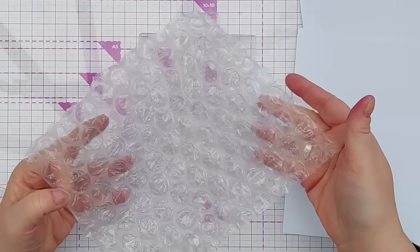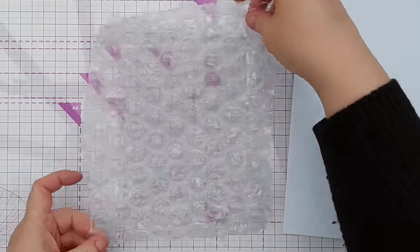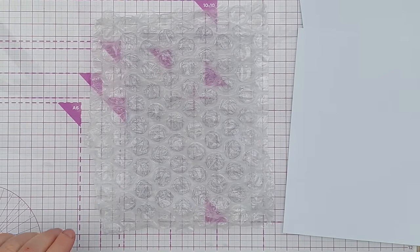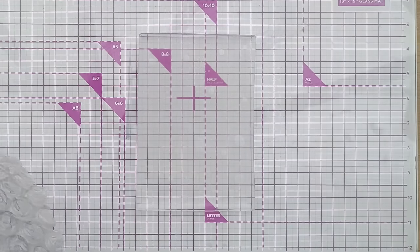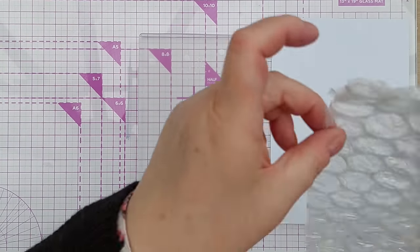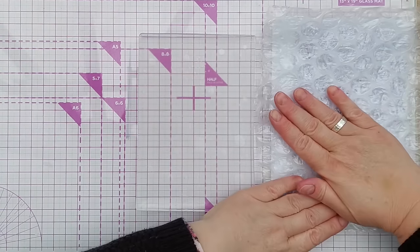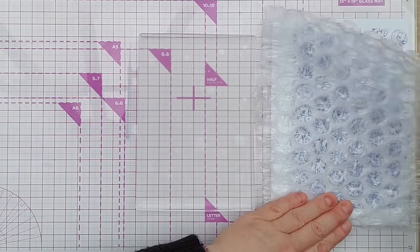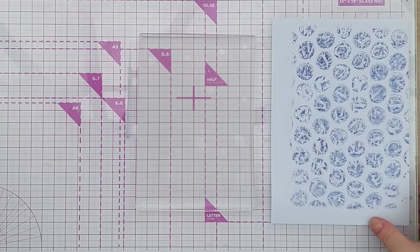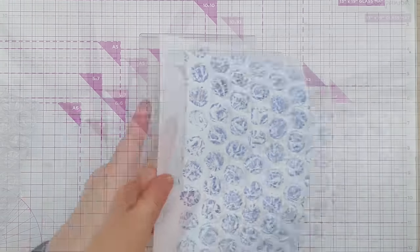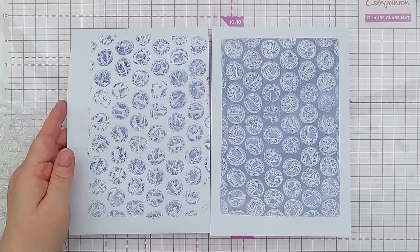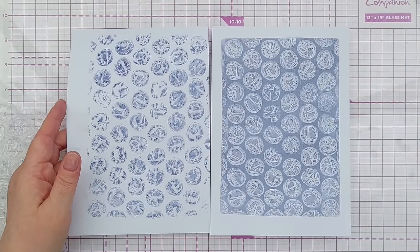Now we should have some ink left on here and I think what I'm going to do is spritz it with a bit of water and then press this down on this piece of paper to take the ink off and make a kind of negative or inverse of what we've got. So we've got two really gorgeous prints there.